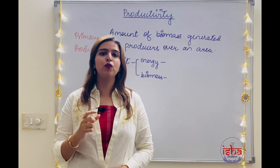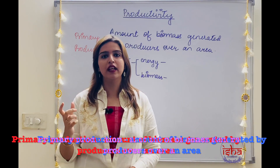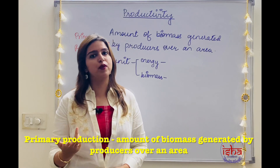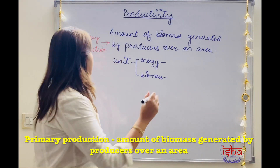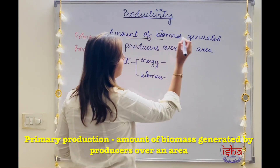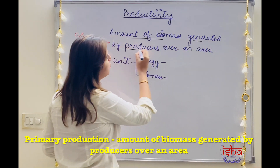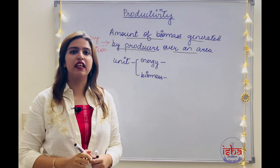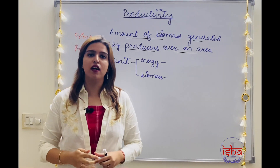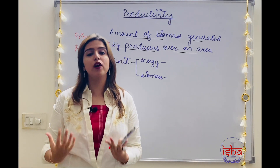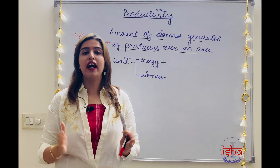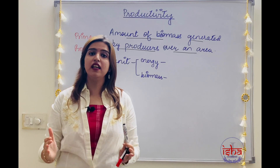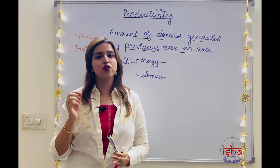So now, what is primary production? Naturally, it is the biomass that is being generated by the primary producers. That is what it is — the amount of biomass generated by producers over an area. Area is necessary; you need to specify an area in kilometers or in meters. So that area is very important.